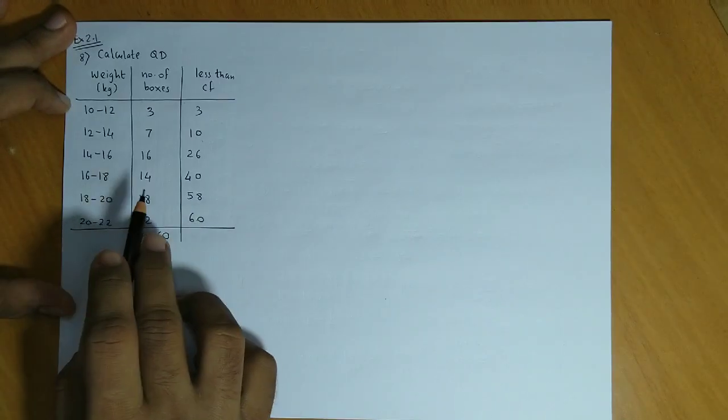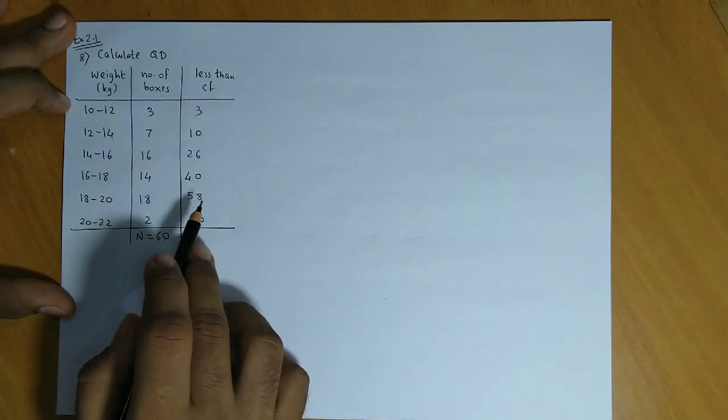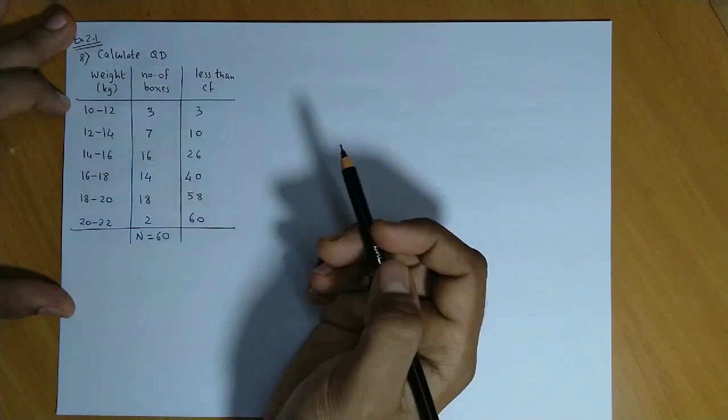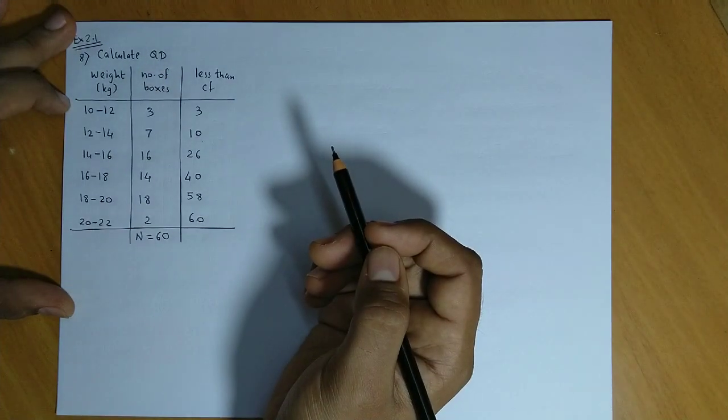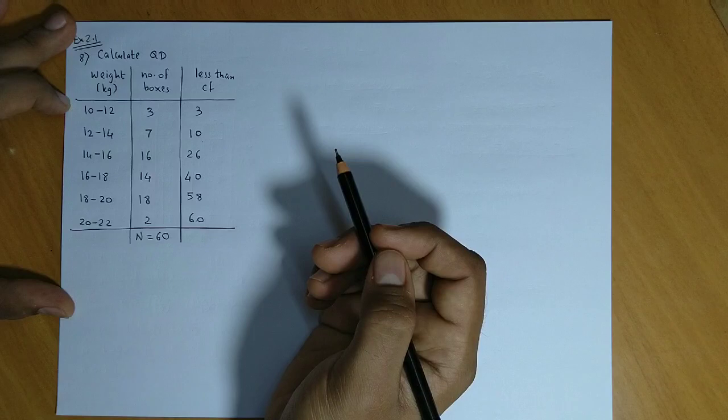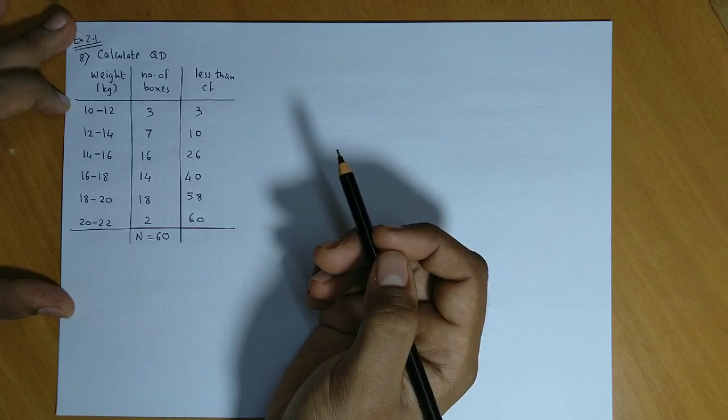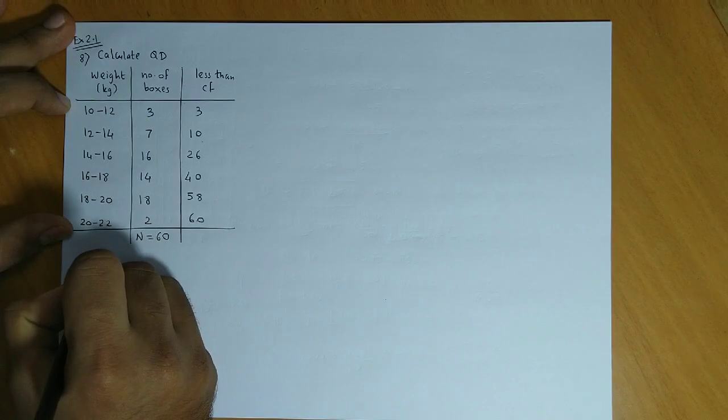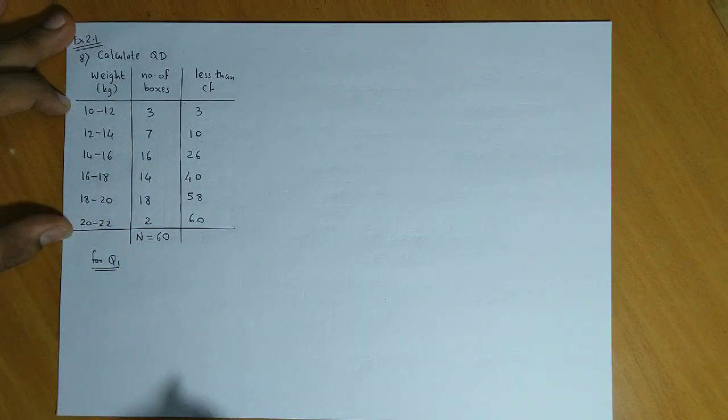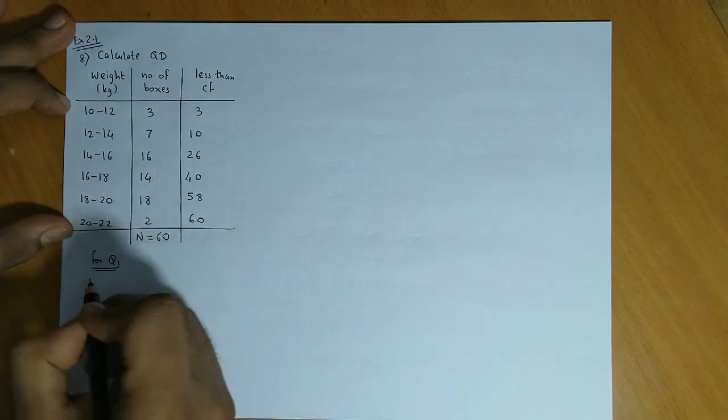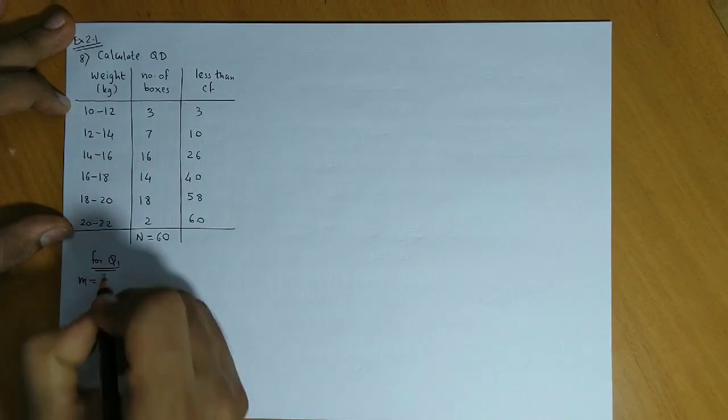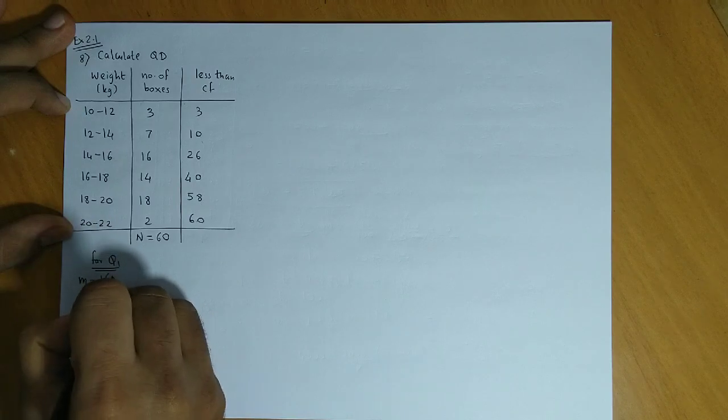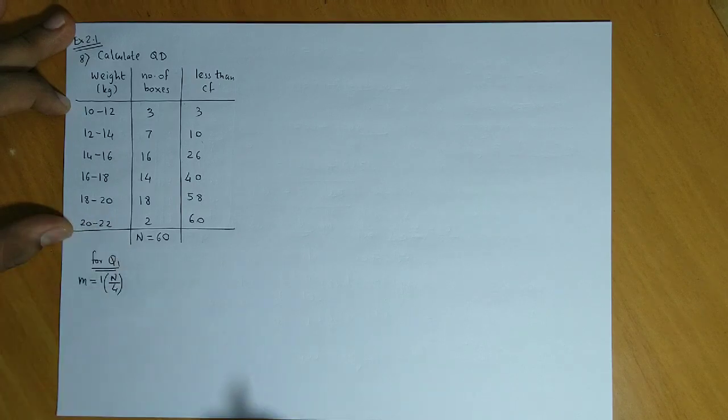Weight, number of boxes (frequencies), and less than CF columns are shown. We find quartile deviation using Q1 and Q3, the lower and upper quartiles. For lower quartile Q1, we first find rank M, which equals 1 times N upon 4.